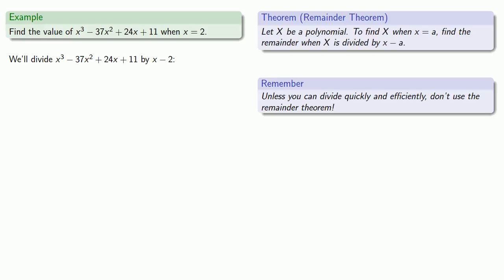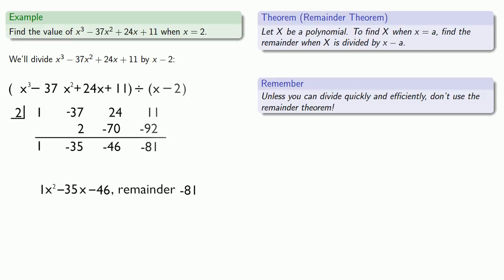Fortunately, we do have a quick and easy method of doing a division of this type. We can use synthetic division. So we'll divide X cubed minus 37X squared plus 24X plus 11 by X minus 2. And so our polynomial is negative 81 when X equals 2.